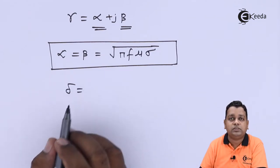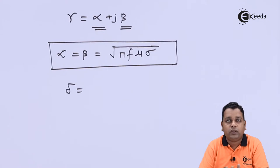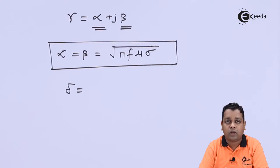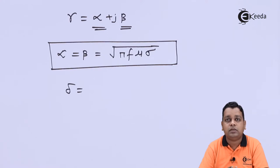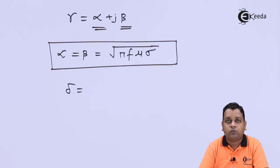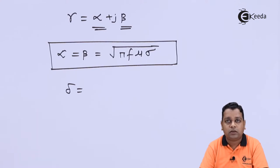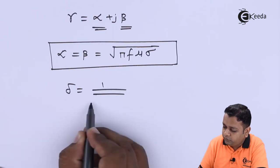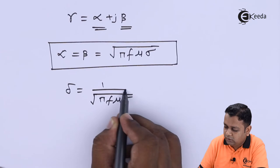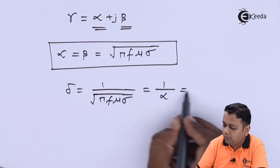Delta (δ) is the skin depth. An electromagnetic wave or microwave cannot penetrate inside a perfect conductor. However, in practical conductors such as copper or aluminium, the microwave penetrates to a certain extent, beyond which the E and H field components vanish. The distance of penetration is called the skin depth, denoted δ. For a good conductor, δ = 1/√(πfμσ), which is also equal to 1/α or 1/β.